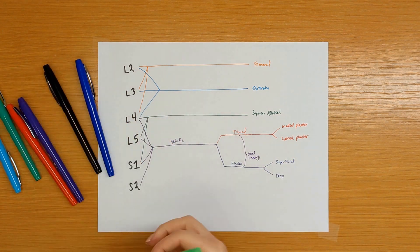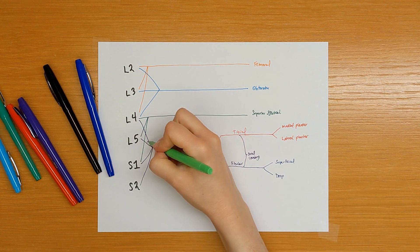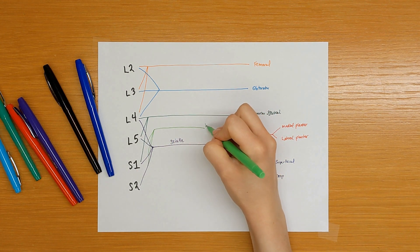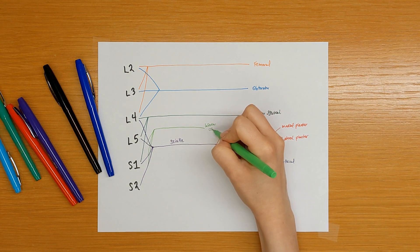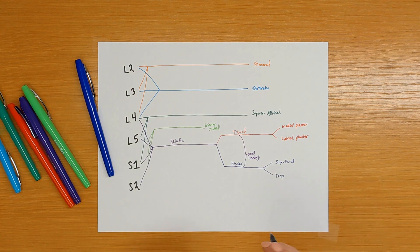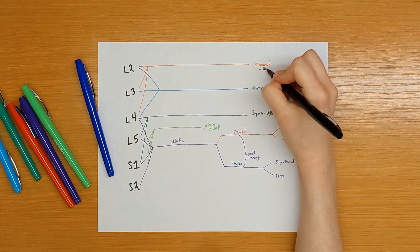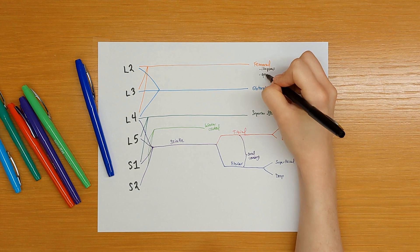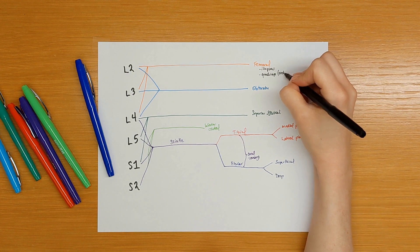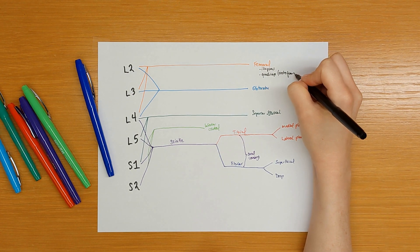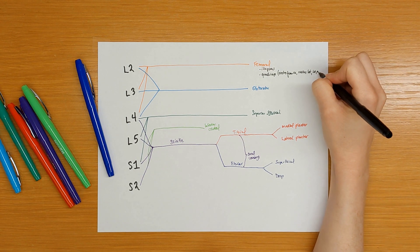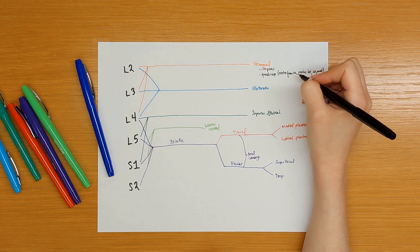We're going to add one more nerve off of L5, S1, and S2: our inferior gluteal nerve. Those are all the nerves. Let's add in the muscles. The femoral nerve innervates the iliopsoas muscle, as well as the quadriceps muscle, which is comprised of four muscles. We need to memorize the names of these muscles: the rectus femoris, as well as the vastus lateralis, intermedius, and medialis. Those are the four muscles of the quadriceps.